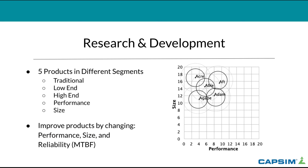Let's look into each step in more detail. First, research and development: you have five products and each one is in a different segment — traditional, low-end, high-end, performance, and size. The graph on the right shows each product overlapping a little; that circle represents what the consumer expects in terms of size and performance. You're going to improve products by changing performance, size, and reliability — referred to as MTBF (mean time before failure) — which reflects the quality of the products.